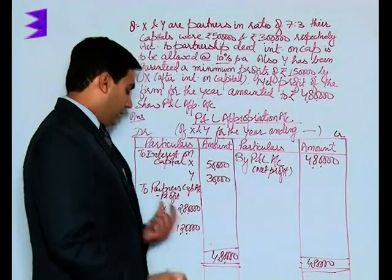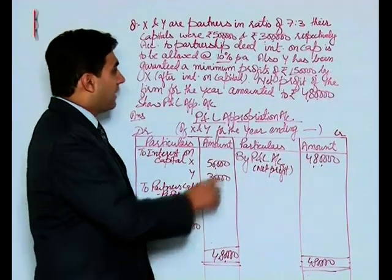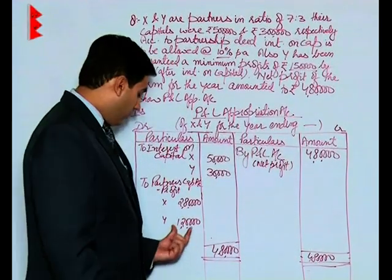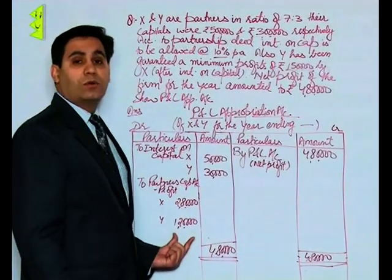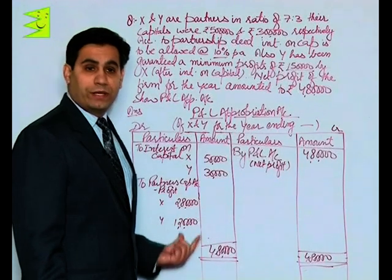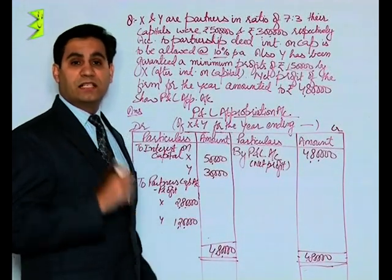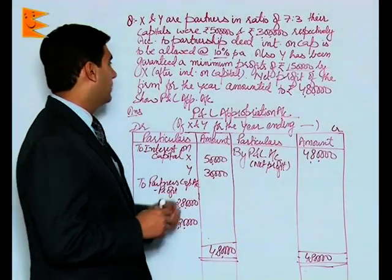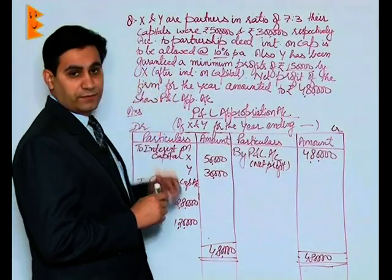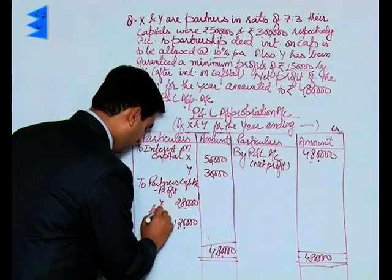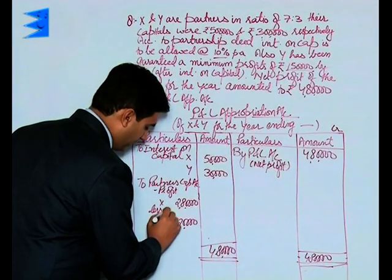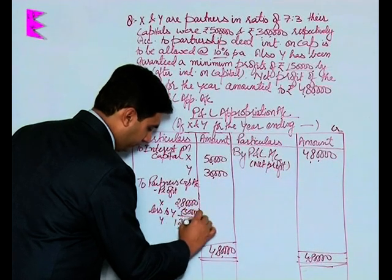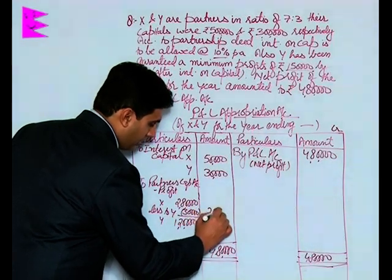Coming to Y, only Y has been guaranteed a minimum sum of rupees 1 lakh 50,000. But here Y is actually getting only rupees 1 lakh 20,000. That means there is a deficiency of 30,000 and this deficiency has to be made by X. So we will deduct 30,000 out of X.